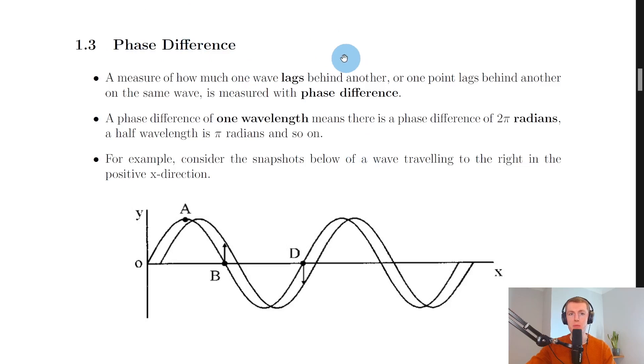So what do we mean by phase difference in terms of waves? It's a measure of how much one wave lags behind another or one point lags behind another on the same wave. A phase difference of one wavelength means there is a phase difference of two pi radians, a half wavelength is pi radians and so on. We tend to describe phase difference using radians.